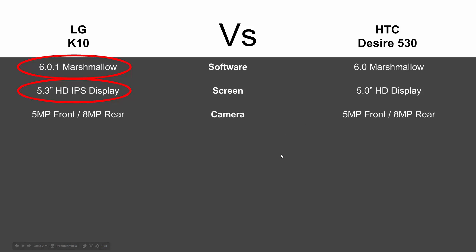In terms of camera, they're going to be the same across the board — 5 megapixels on the front, 8 megapixels on the rear, so a draw there. Internal memory is also a draw at 16 gigs of internal memory, about 9 to 10 gigs available for the user.